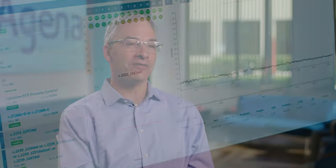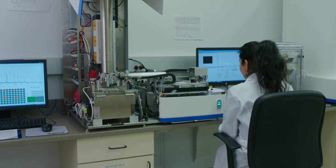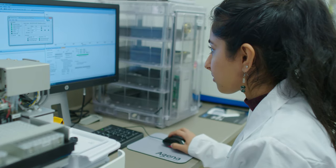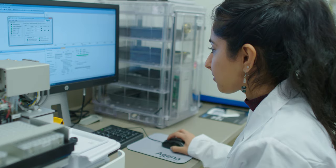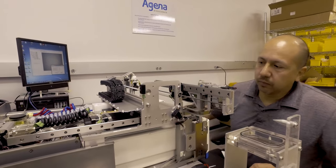Agena designs, develops, and manufactures our mass array system within our headquarters in San Diego, California. It helps us to assure the highest quality in our product and it enables effective teamwork amongst the development teams and the manufacturing teams to support our customers in the best way possible.